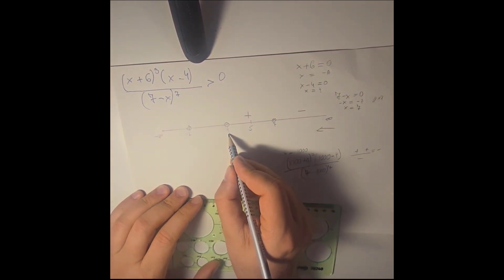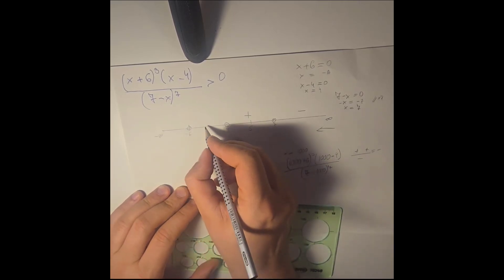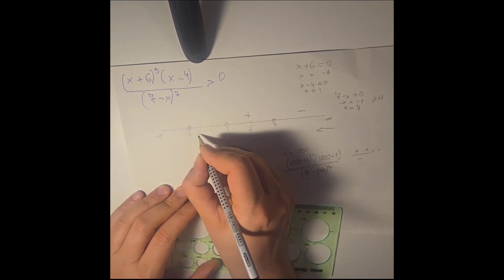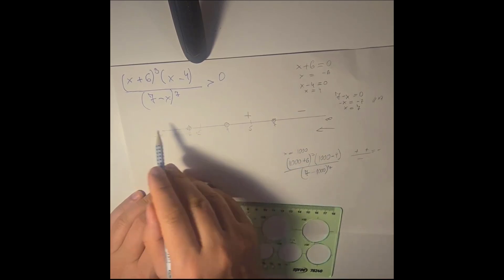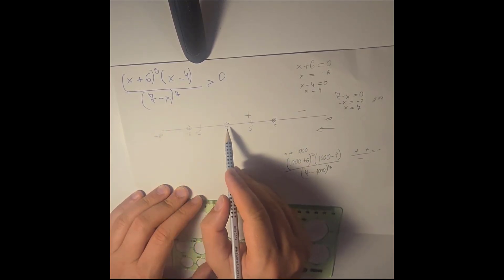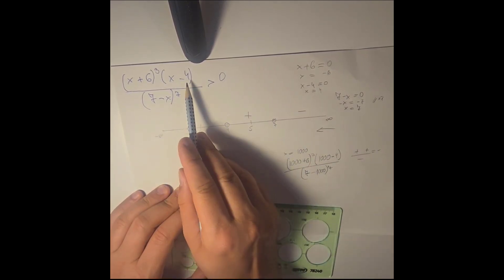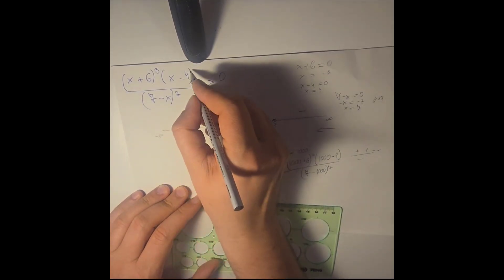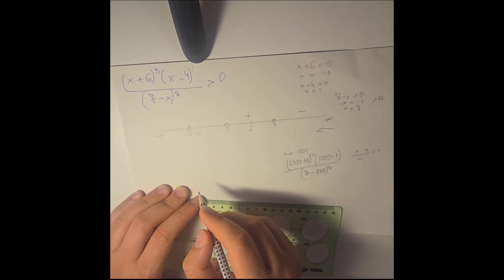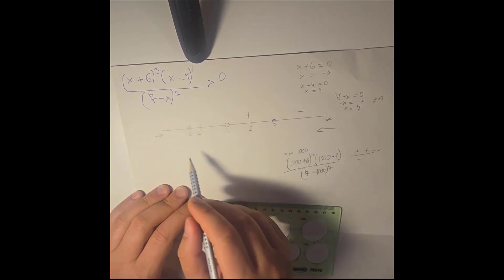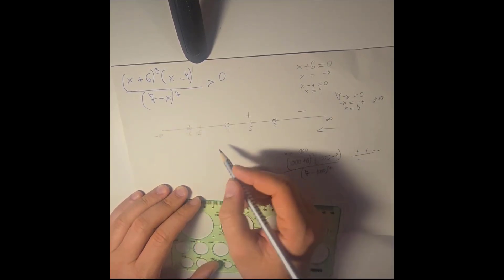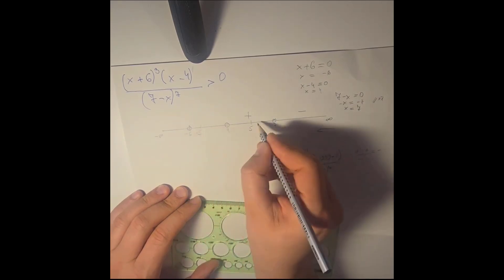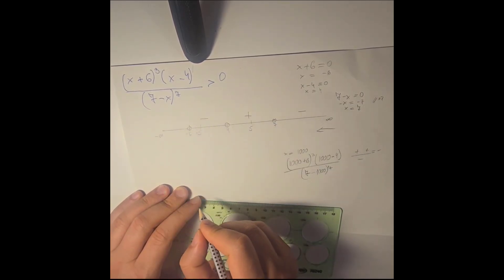Then we go to the 4. Again we have two options. We can go and select a number like minus 5 and replace x with minus 5. Or we can take a look at the 4 and we can say, hey, I don't see a number here. So it's obviously a 1. If it is a 1, it is an odd number. So again we change the sign. From plus it becomes a minus.